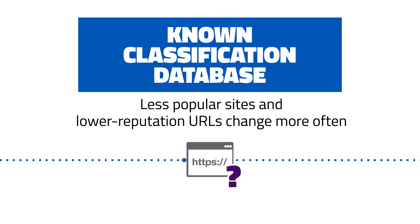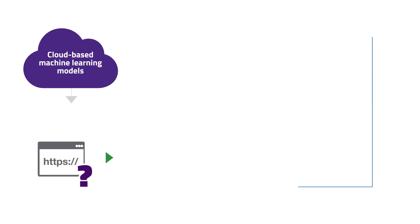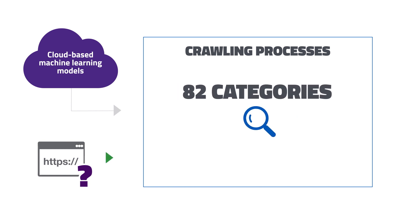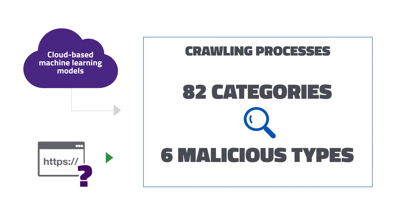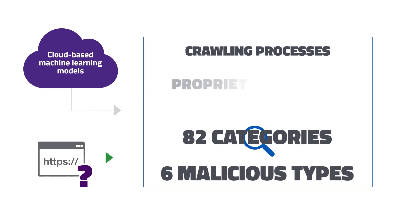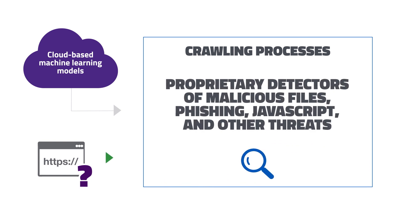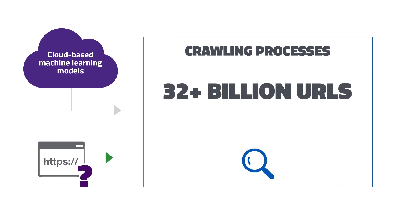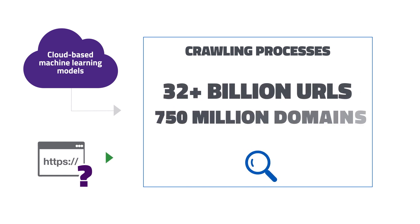Less popular sites and lower-reputation URLs change more often, and so are recrawled more frequently. Unknown URLs trigger an automated crawling process through a robust engine that classifies URLs into 82 categories, including six malicious types. The classification is honed further by proprietary detectors of malicious files, phishing, JavaScript, and other threats. To date, this system has processed more than 32 billion URLs and 750 million domains covering the public Internet.